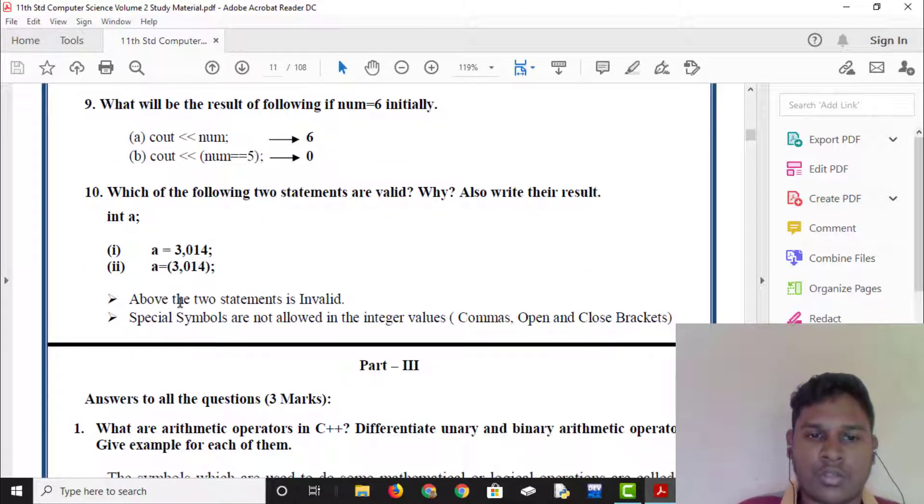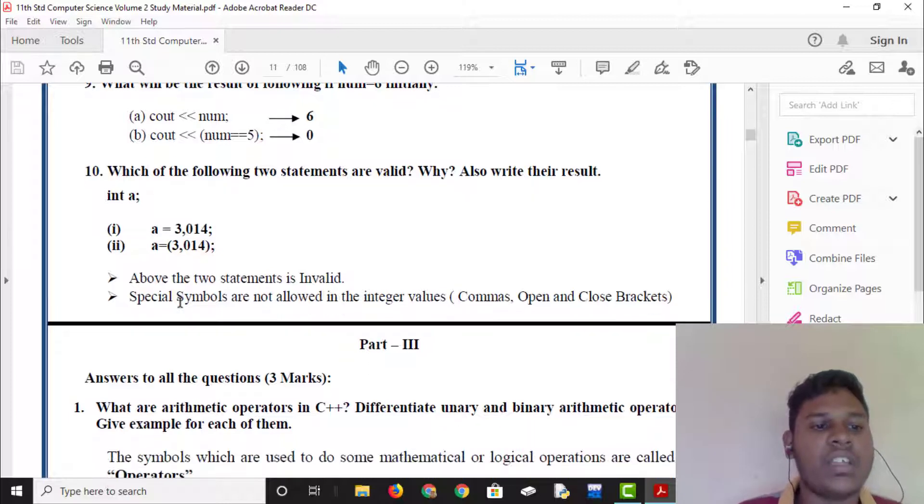Which of the following two statements are valid while also write their result. Int a, a is equal to 3,014. Above two statements is invalid. a is equal to bracket. Above the two statements is invalid. Special symbols are not allowed in the integer values. Commas, open and close brackets.